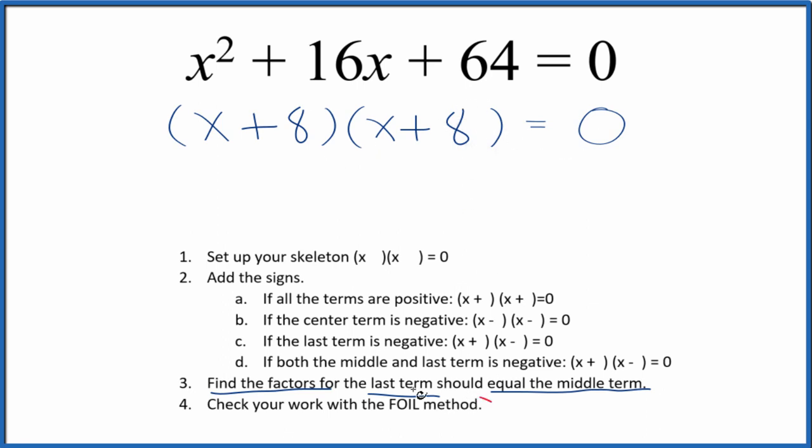We should check our work, however, with the FOIL method. We'll multiply the first, the outside, the inside, and then the last terms, like this.